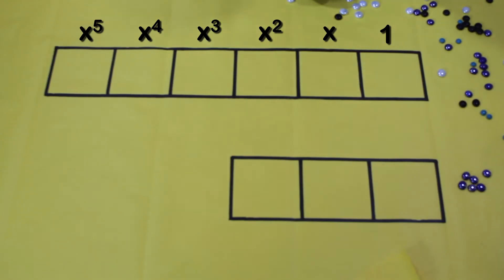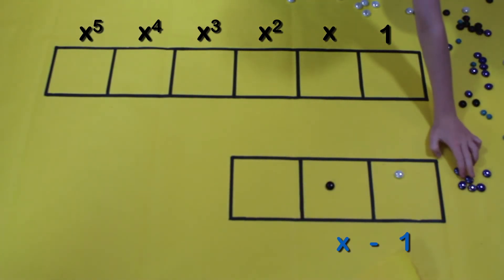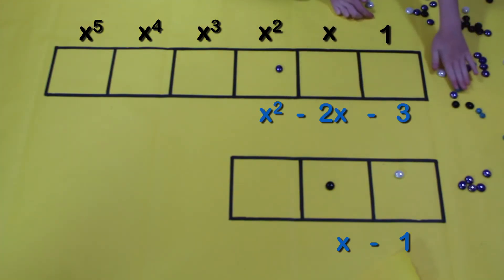Alright, time for another example. This one is going to be x minus 1. Okay, we got x minus 1, now x squared minus 2x minus 3.